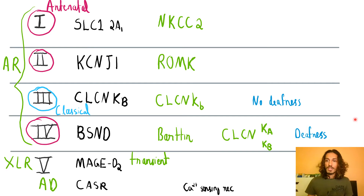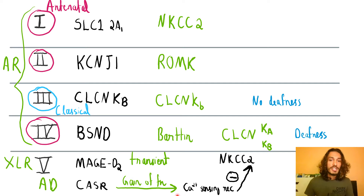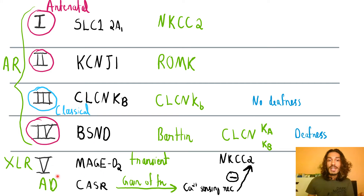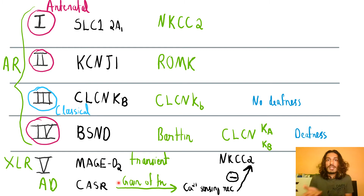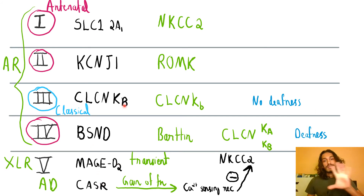Apart from this, there is an autosomal dominant variety which has been recently discovered. It affects your calcium-sensing receptor. Normally, the calcium-sensing receptor inhibits your sodium-potassium-2-chloride channels. In this autosomal dominant variety, there is a gain-of-function mutation, so the inhibition of the sodium-potassium-2-chloride channel is increased. Remember, in all the other varieties there is a loss-of-function mutation — only in the autosomal dominant variety is there a gain-of-function. So the affected transporters in Bartter syndrome can include the NKCC2, ROMK, chloride channel, barttin, MAGED2, or CaSR.